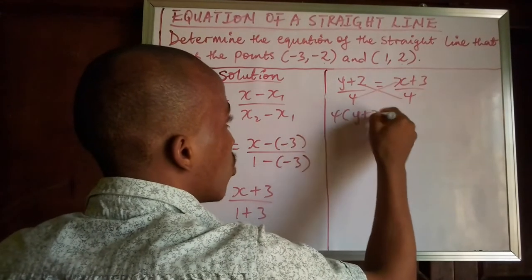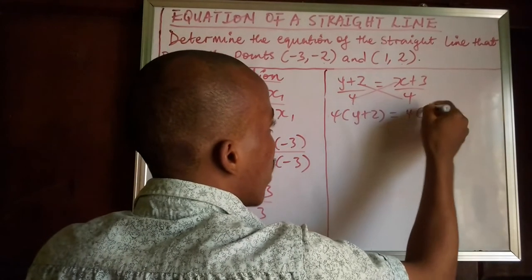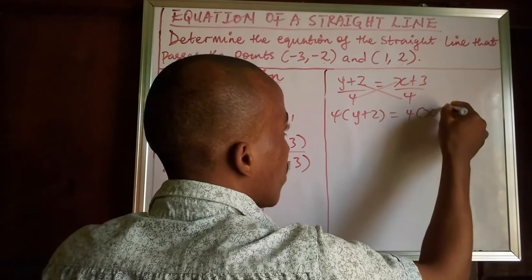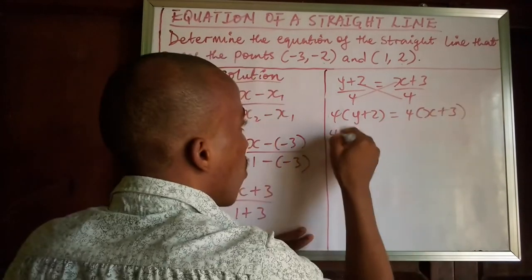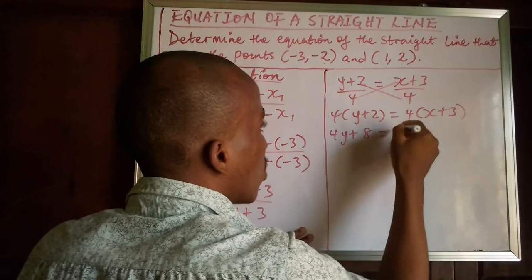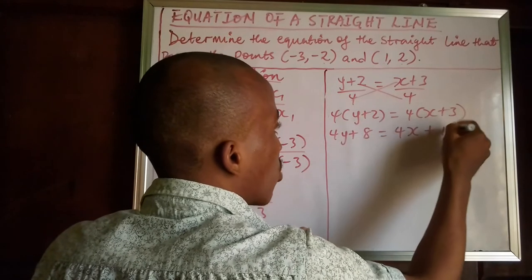Cross multiply. 4(y + 2) is equal to 4(x + 3). So we have it as 4y + 8 is equal to 4x + 12.